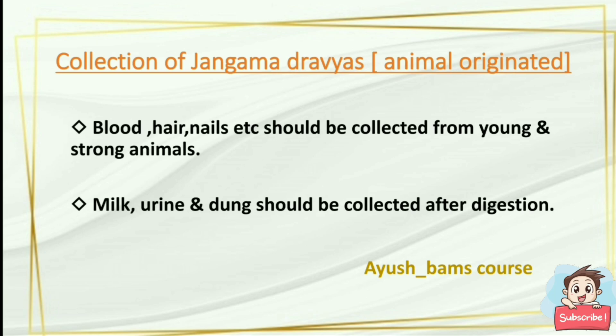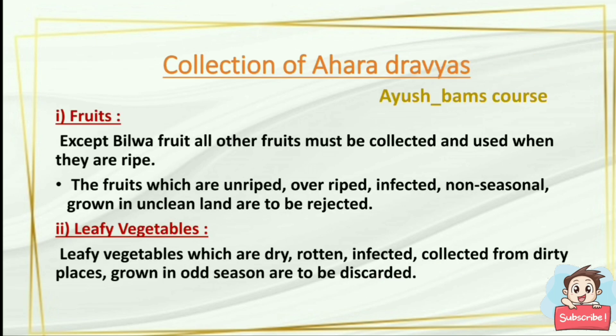Collection of jangama dravyas — those generated from animals — such as blood, hair, and nails, should be collected from young and strong animals. Milk, urine, and dung should be collected after digestion. For collection of ahara dravyas, except the bilwa fruit, all other fruits must be collected and used when they are ripe. Fruits which are unripe, overripe, infected, non-seasonal, or grown in unclean land are to be rejected.